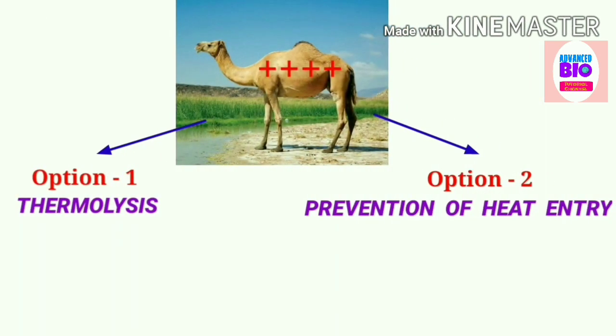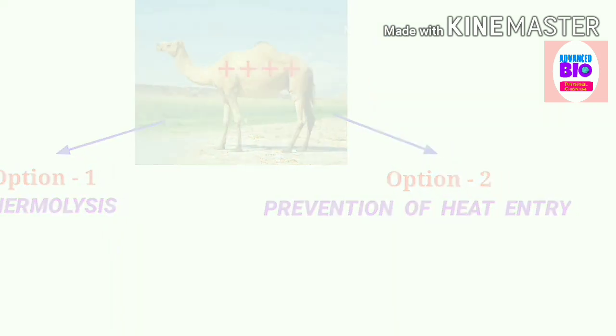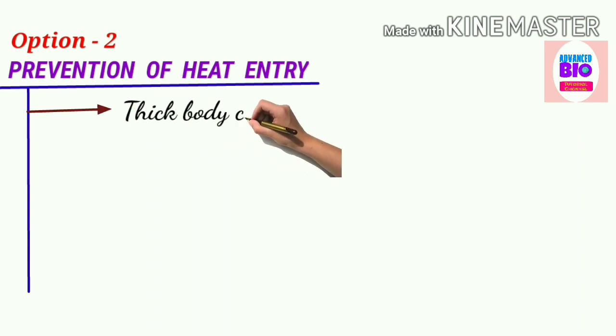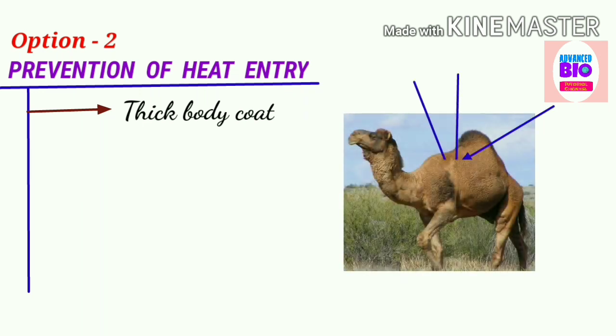Now come to the second option—that is prevention of heat entry in camels. I am discussing the adaptations for this purpose one by one. Point number one: that is thick body coat. A camel has a body coat of several centimeters thick, which gives it good protection against the heat gain by radiation from the surroundings.